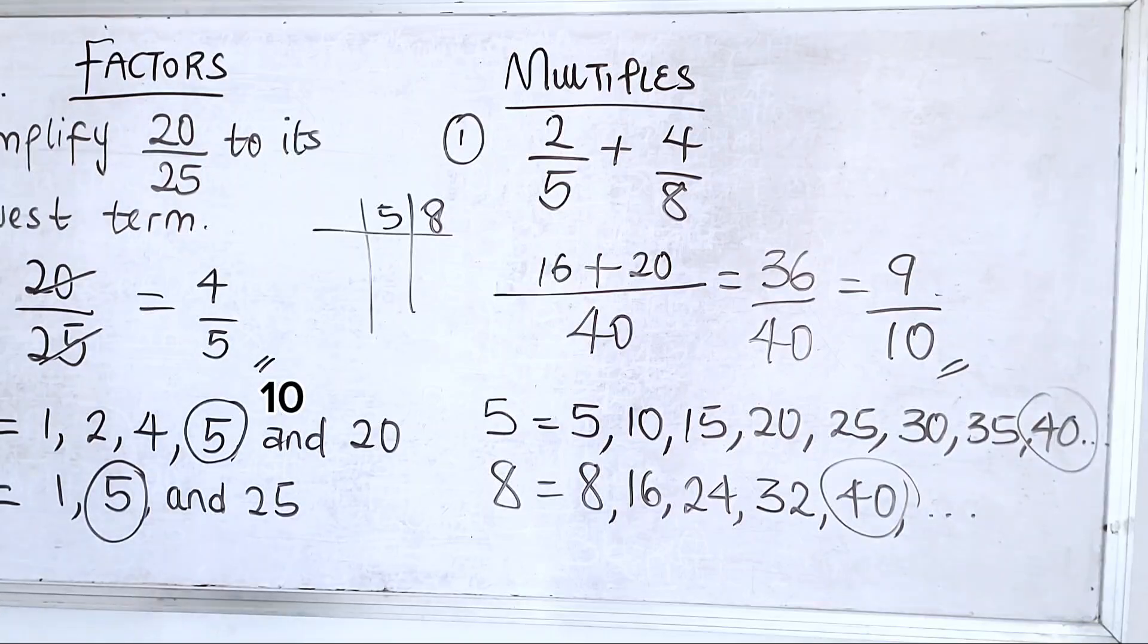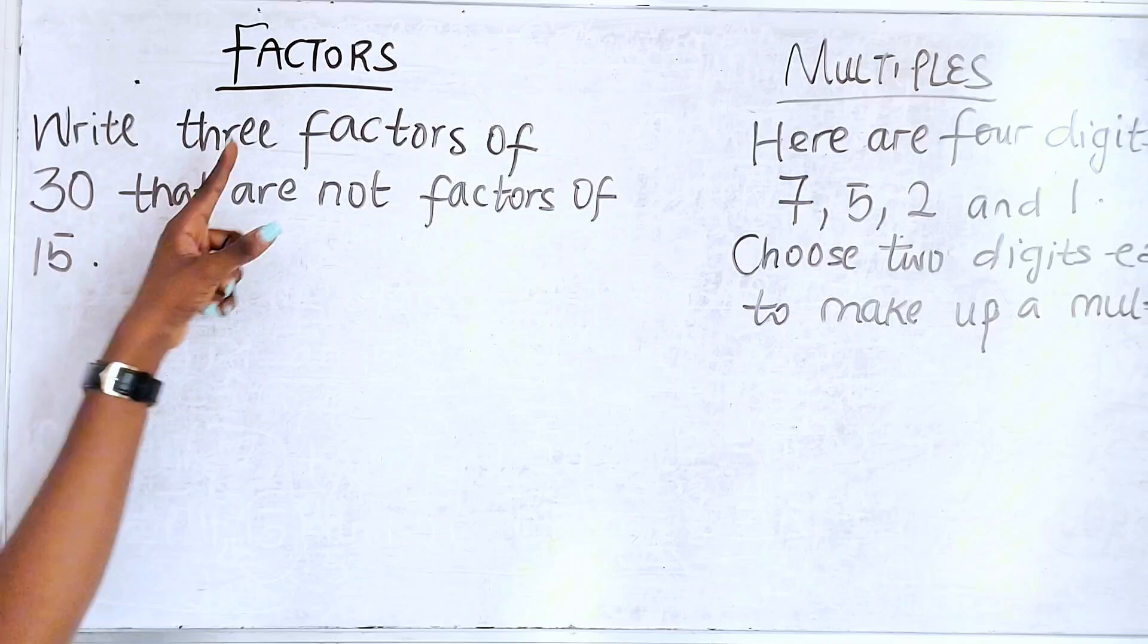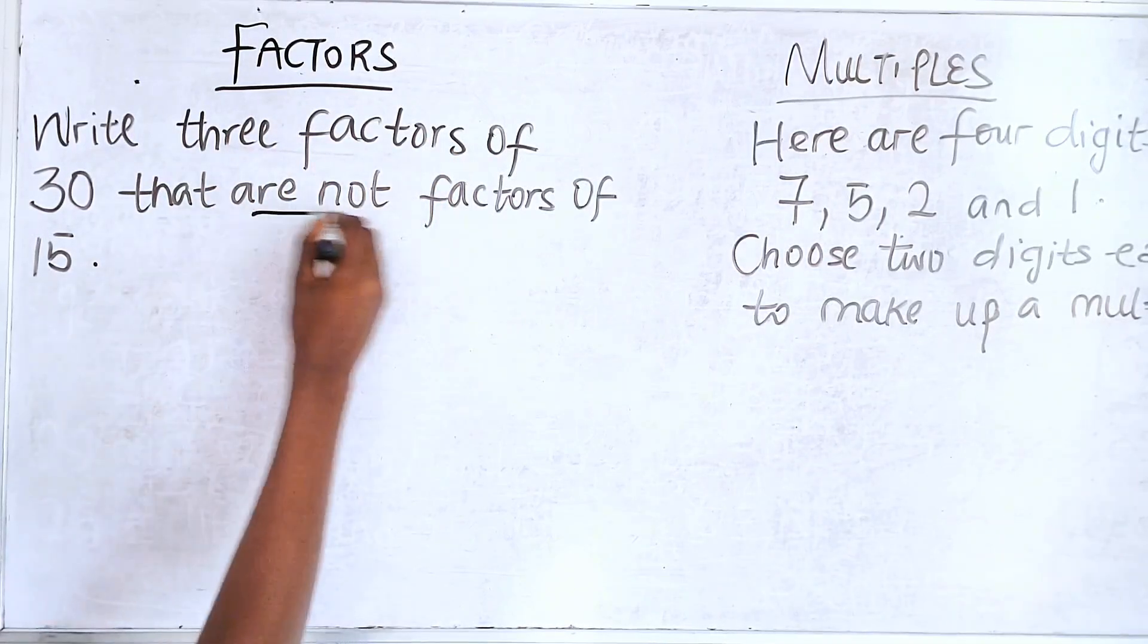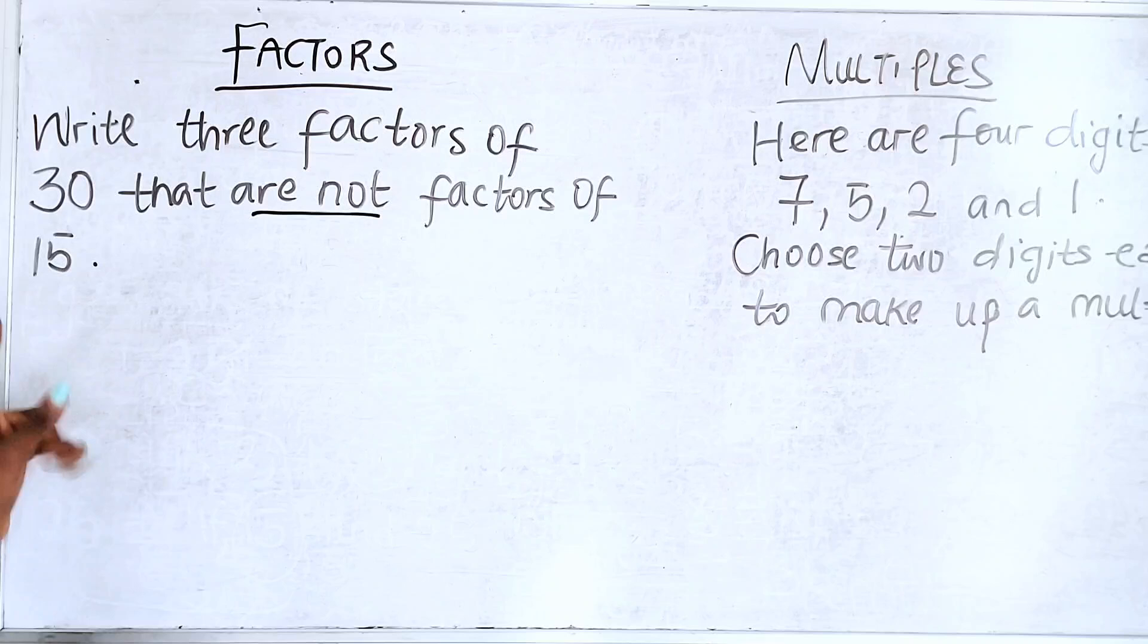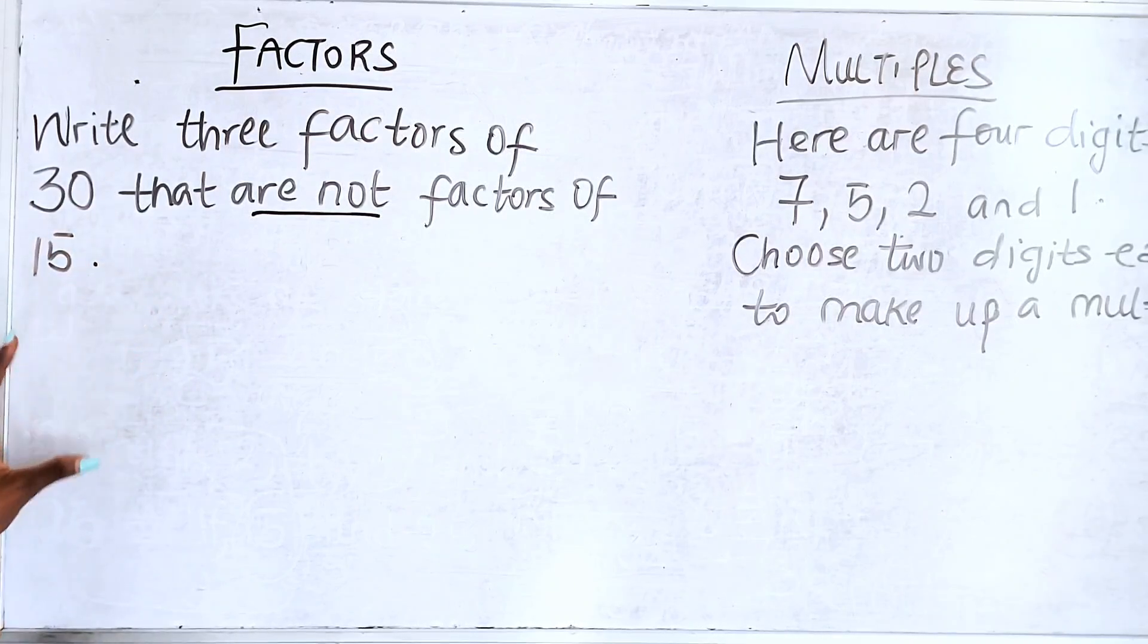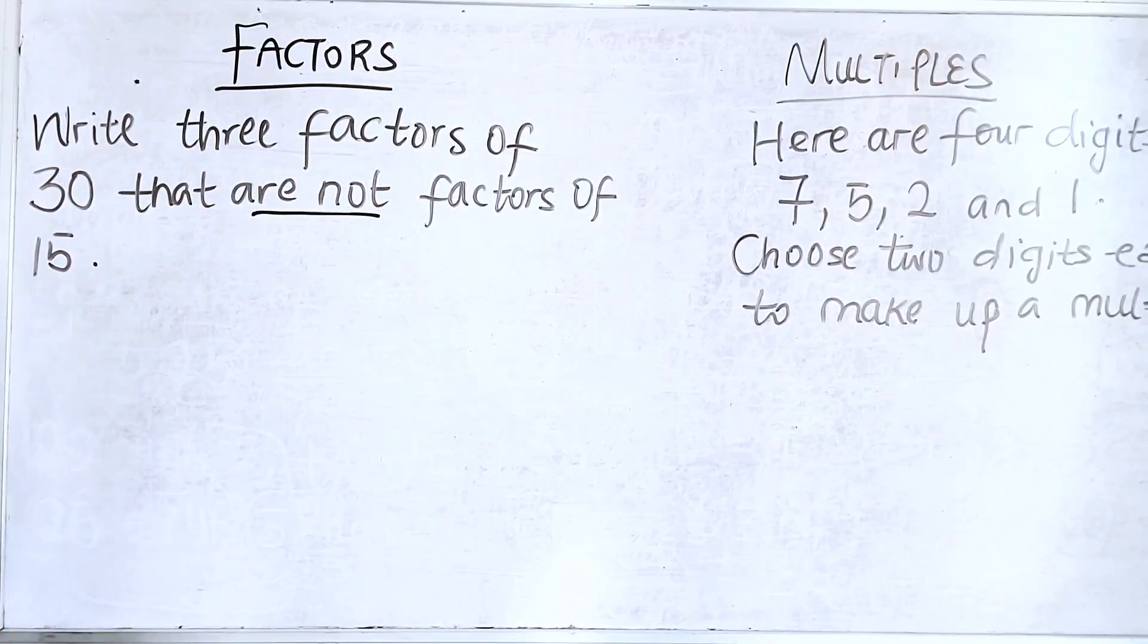I think we can do some more examples so we are together. So under factors, write 3 factors of 30 that are not, take note, that are not factors of 15. So we need to find the factors of 30, the factors of 15 and then choose the ones that are not factors of 15.